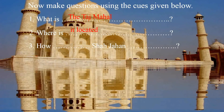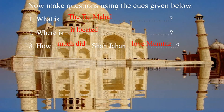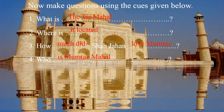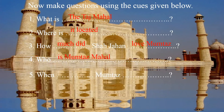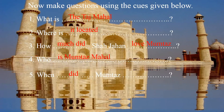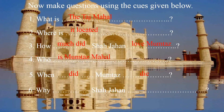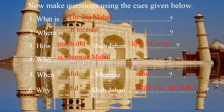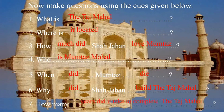The third one has two gaps: How much did Shah Jahan love Mumtaz? Number 4: Who is Mumtaz Mahal? Number 5: When did Mumtaz die? Number 6: Why did Shah Jahan build the Taj Mahal? And the last one: How many years did it take to complete the Taj Mahal?